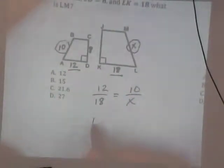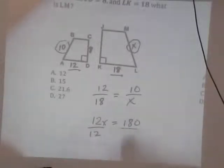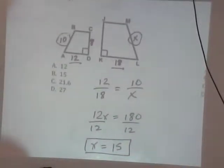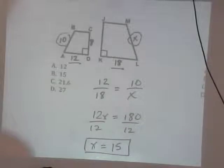So we cross-multiply, we have 12X equals 180. Divide by 12. X is equal to 15.